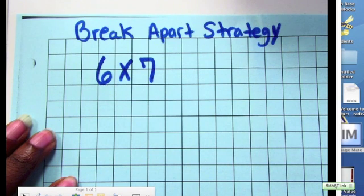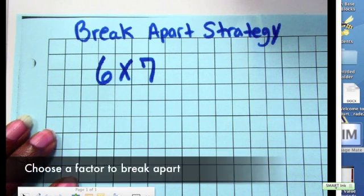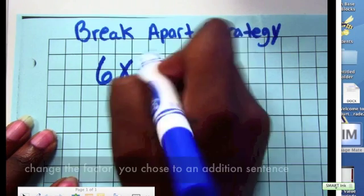I need to decide which factor I am going to break apart. I can break apart the six or the seven. I am going to choose to break apart the seven.